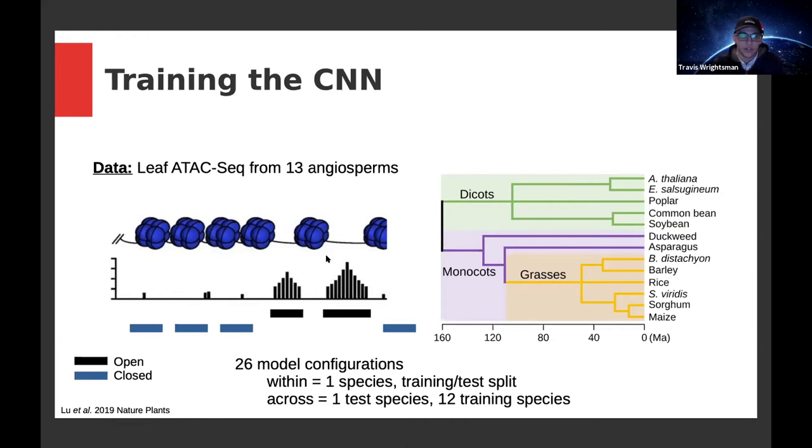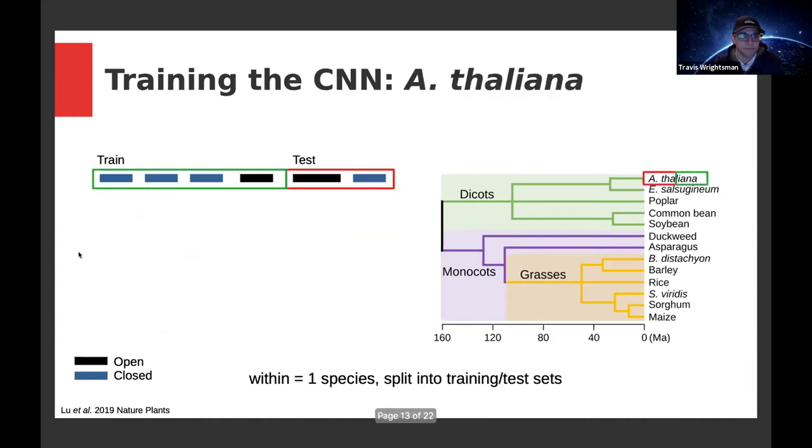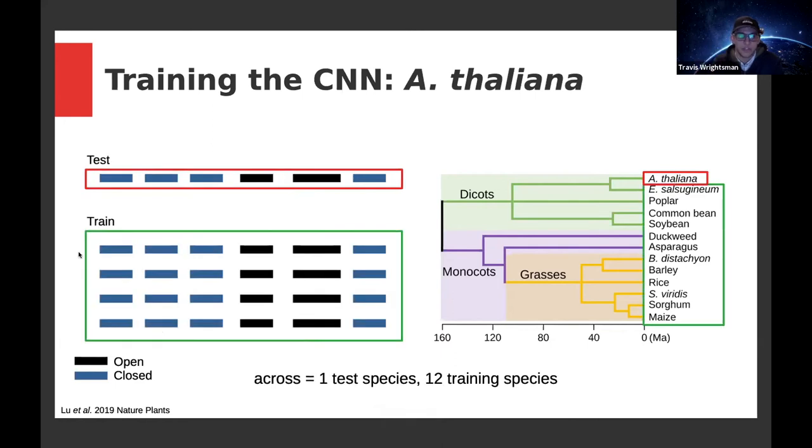A quick overview of how the data looks: the ATAC-seq causes basically a read pileup in these open chromatin regions, and you can run an algorithm known as a peak caller to binarize that output and denoise the open chromatin region predictions. Then you can randomly sample a group of closed chromatin regions from the genome. For a specific species, let's say Arabidopsis, the within species model is straightforward—you split the genomic regions and train in the training set and then test in your test set. The across species model, if we're testing in Arabidopsis, we would train in the other 12 species and attempt to predict in Arabidopsis.